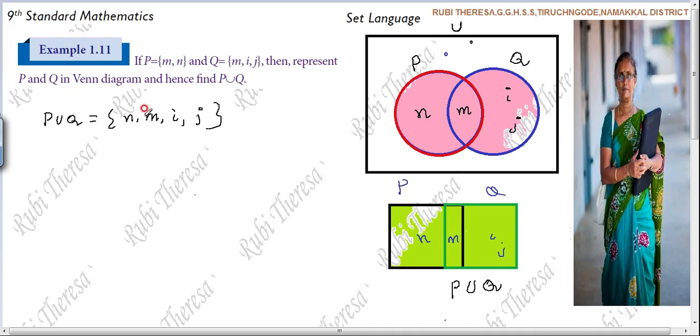Elements should not repeat. Only one time the element should be written. The only thing is, common element first, then the remaining elements. That's it. Right? Ok. Thank you.